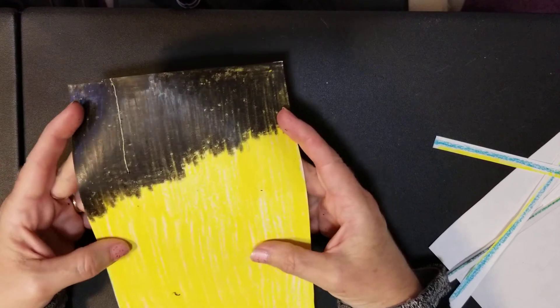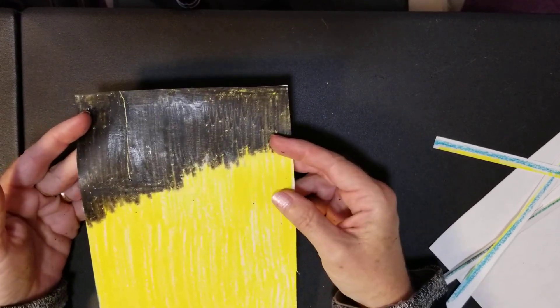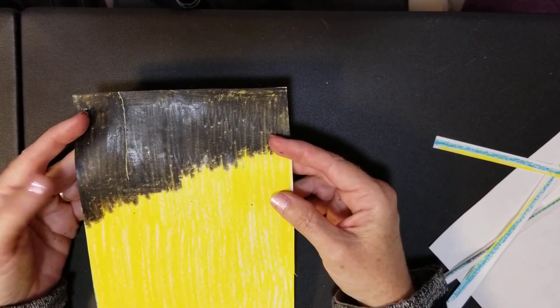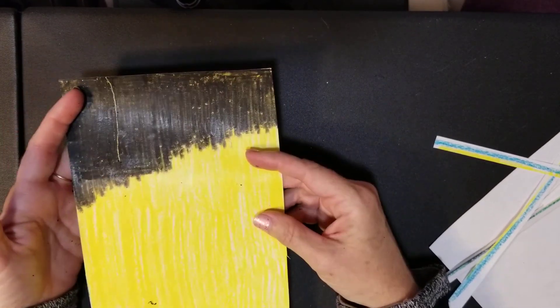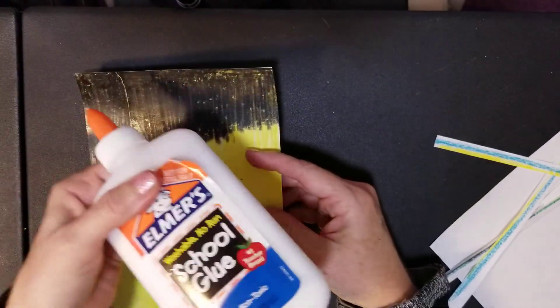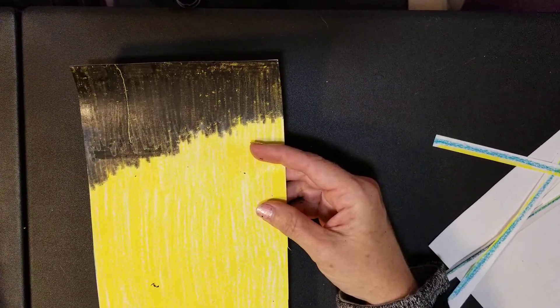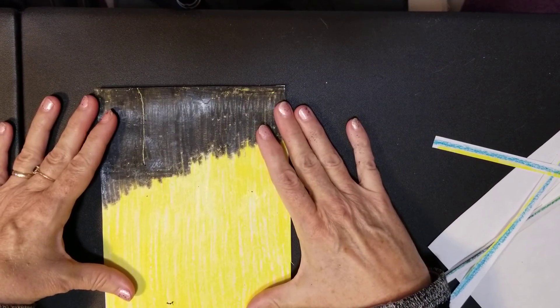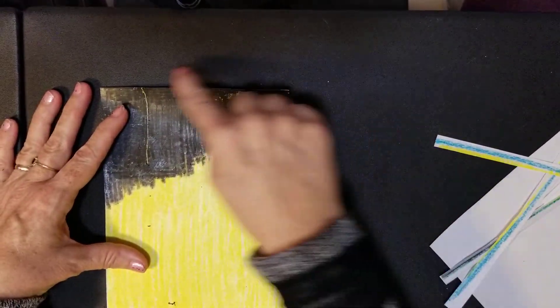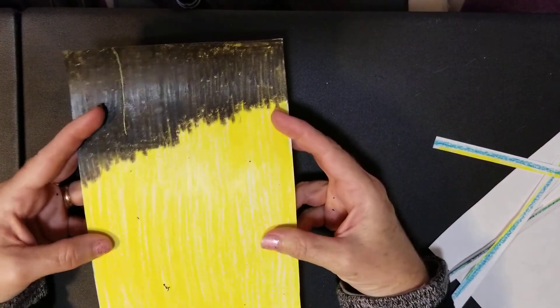If possible, find the back of a tablet, cardboard box, or something stiffer than plain paper. Take some glue or glue stick and glue this down to the cardboard, then cut the cardboard out the same size as your scratch paper.